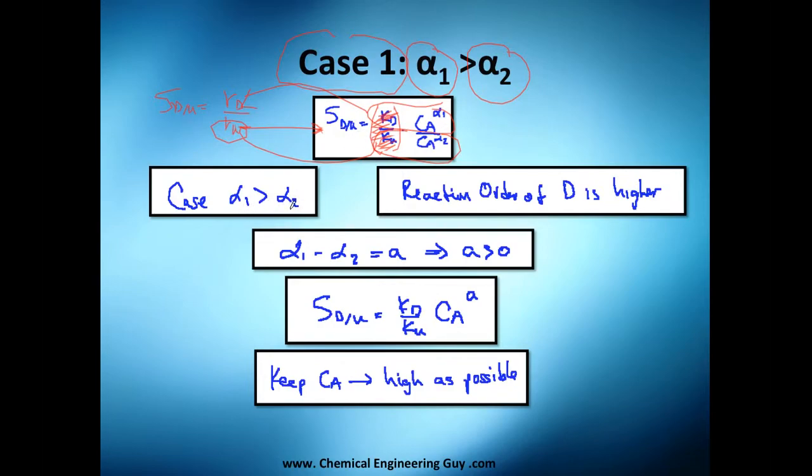Now alpha one is greater than alpha two, reaction order of D is higher, so that's good. As we increase CA, there will be a square effect and this will be only a linear effect. So we have three times here, we will have nine times, whereas we will have here only three.